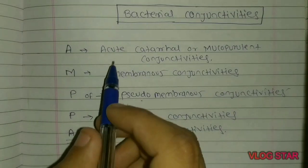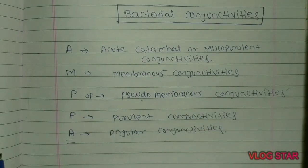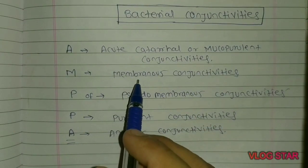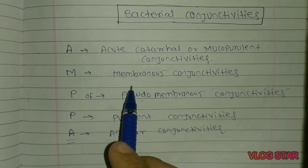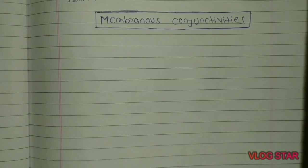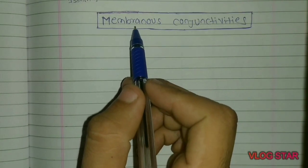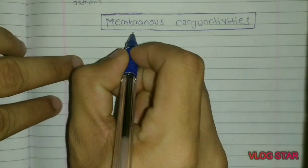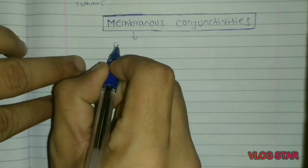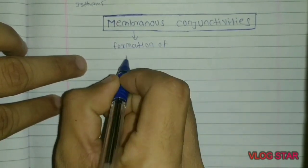In the last part we covered Acute Catarrhal or Mucopurulent Conjunctivitis. Now let's talk about the second type of bacterial conjunctivitis, that is Membranous Conjunctivitis. The name itself indicates that this is a type of conjunctivitis characterized by the formation of membrane.